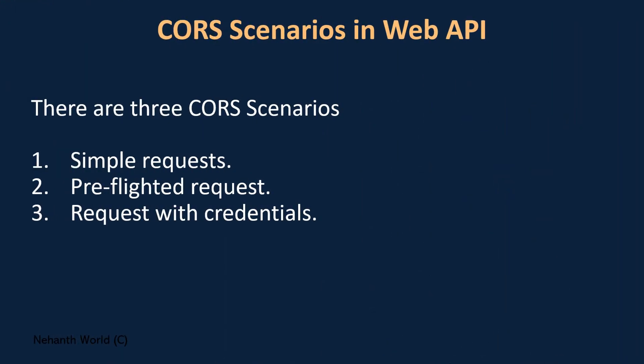These are the three scenarios. First one is a simple request. Second one is a preflighted request. Third one is a request with credentials. These are the three different scenarios we will encounter when we are using CORS.